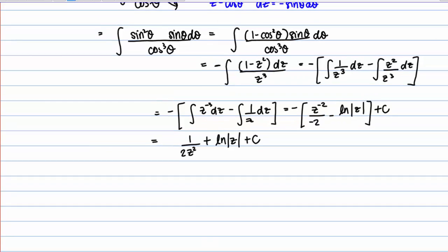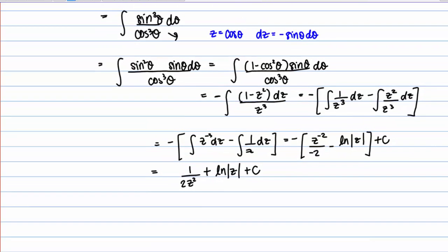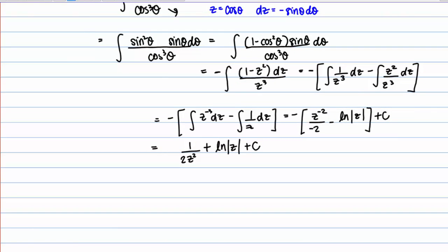Now let's get things back in terms of theta. Since z equals cosine of theta, this becomes 1 over 2 cosine squared of theta, plus the natural log of the absolute value of cosine of theta, plus C.